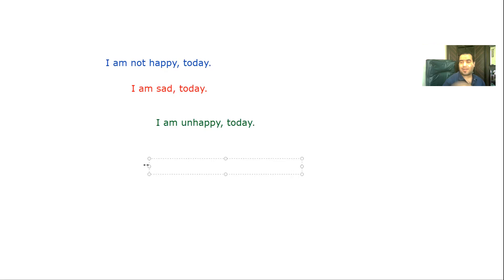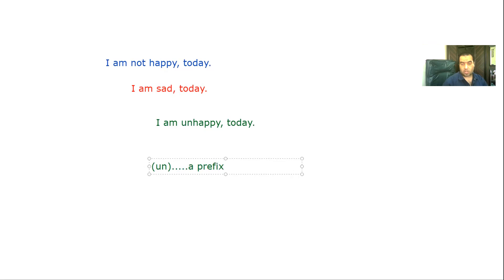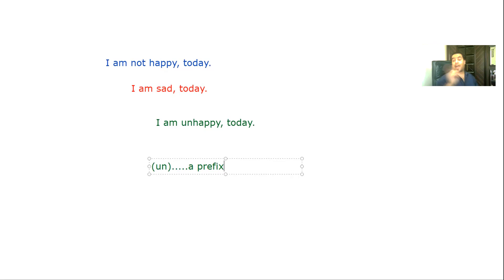If I compare happy and unhappy, I find that there is UN at the beginning of the word. We call this UN a prefix. So what is a prefix? It is a group of letters that we use at the beginning of the word, before the word, to change the meaning. Always remember: it comes before the word.